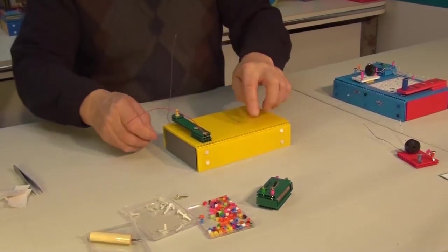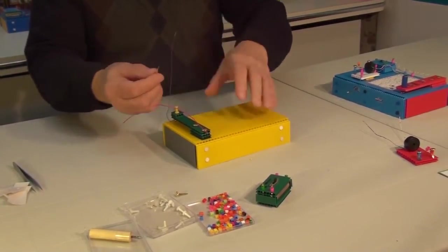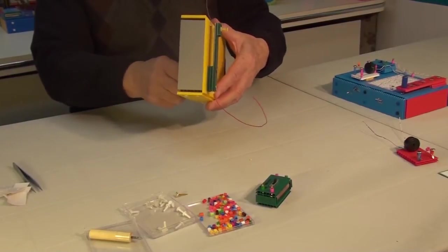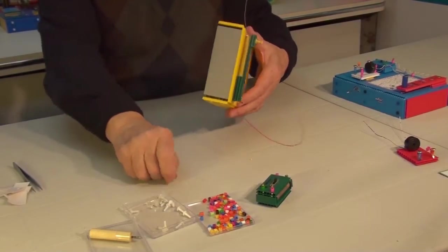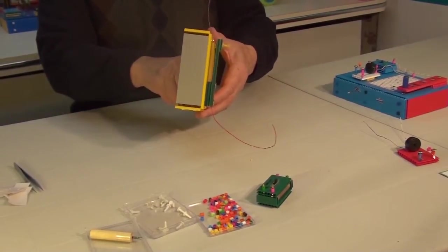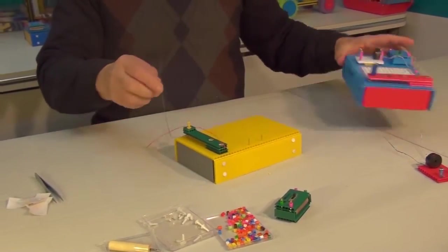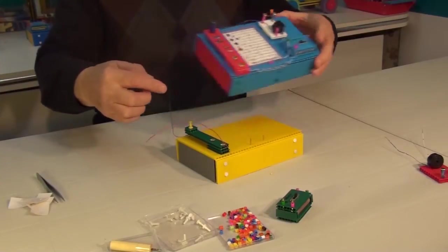Now in these holes from underneath we must insert two contacts. Later we'll use this part to connect to an identical telegraph device using a wire. By doing so we will establish communication between the two telegraphs. These are the contacts on the other telegraph.